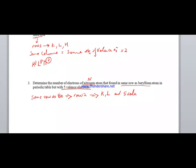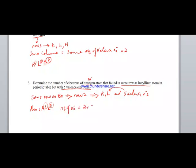Nitrogen has 5 valence electrons in the last energy level L. The electron configuration is K2 L5. To find the total number of electrons: 2 plus 5 equals 7 electrons. This is the number of electrons in the nitrogen atom.